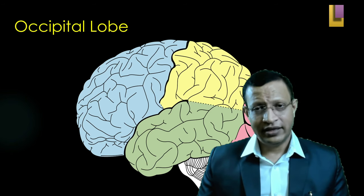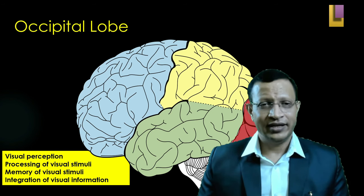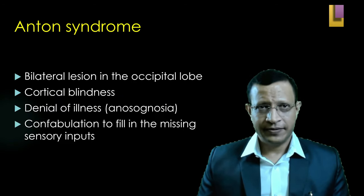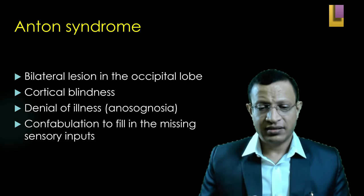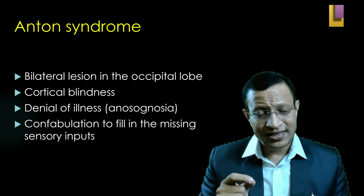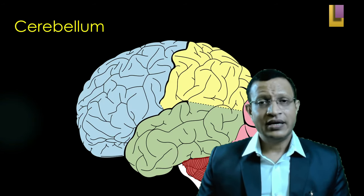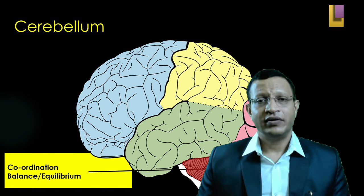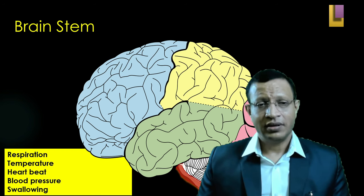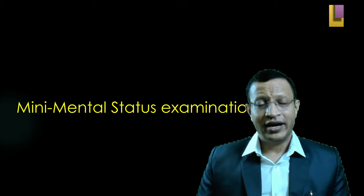Moving to the occipital lobe — functions include visual perception, processing of visual stimuli, memory of visual stimuli, and integration of visual information. Anton syndrome is classically known in occipital lobe lesions — with bilateral lesions, there will be cortical blindness, denial of illness (anosognosia), and confabulation to fill in the missing visual sensory input. Moving to the cerebellum — important functions are coordination, balance, equilibrium, and to some extent memory and organization. The brainstem controls respiration, temperature, heartbeat, blood pressure, and swallowing.